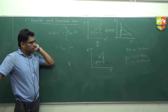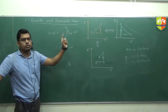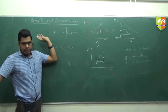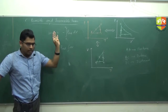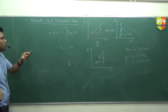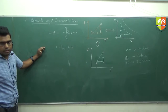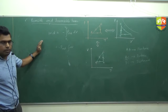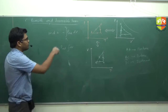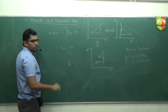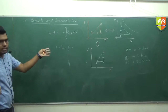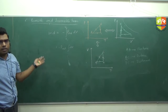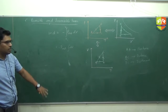In an irreversible process, the external pressure is constant. So when you derive work done in an irreversible process, you can take P_external out of the integral, and we write: W = minus P_external × ΔV for an irreversible process, because P_external is constant.